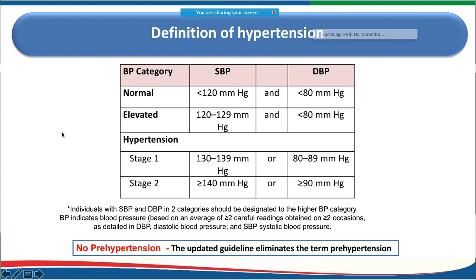Hypertension is defined into various stages. Normal is systolic less than 120 and diastolic less than 80. Elevated is systolic 120–129 with diastolic less than 80. Stage 1 hypertension is systolic 130–139 or diastolic 80–89. Stage 2 is systolic 140 or more, or diastolic 90 or more.